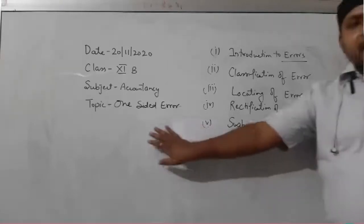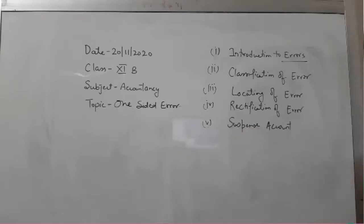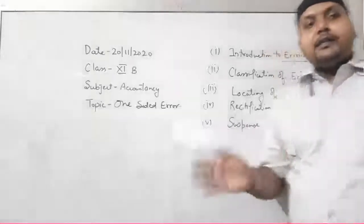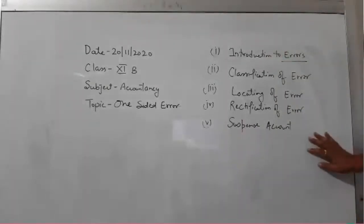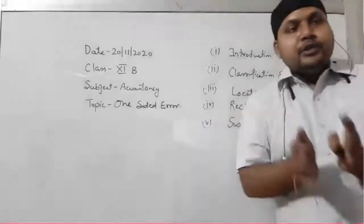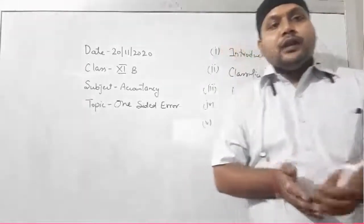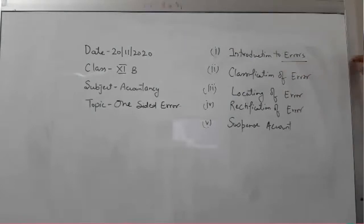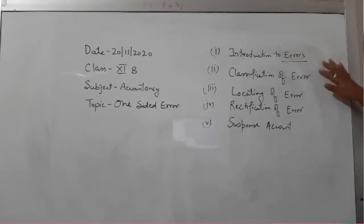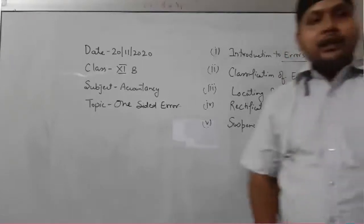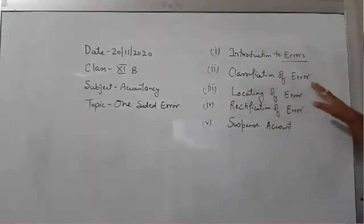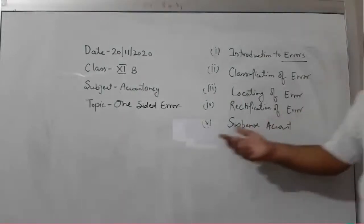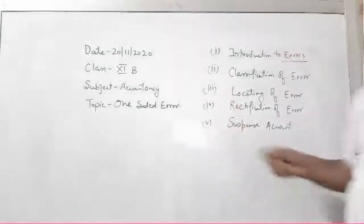What is the one-sided error? In the next video we will move on to numerical questions — how we rectify the suspense error with the help of the suspense account. First of all, what do you mean by error? Error means due to the inefficiency of the accountant, due to the lack of knowledge of the accountant, due to the lack of memory of the accountant, some mistakes are found in the accounting, which are known as errors. Error means mistake — any mistake which occurs while recording in the books of account.